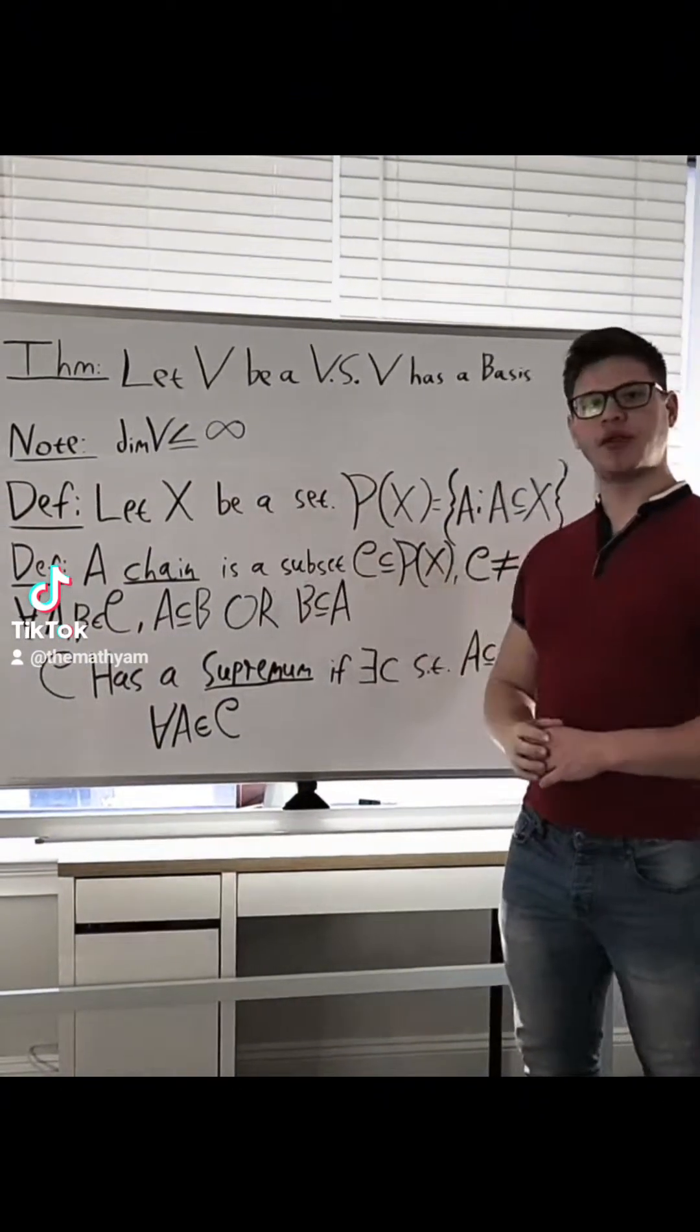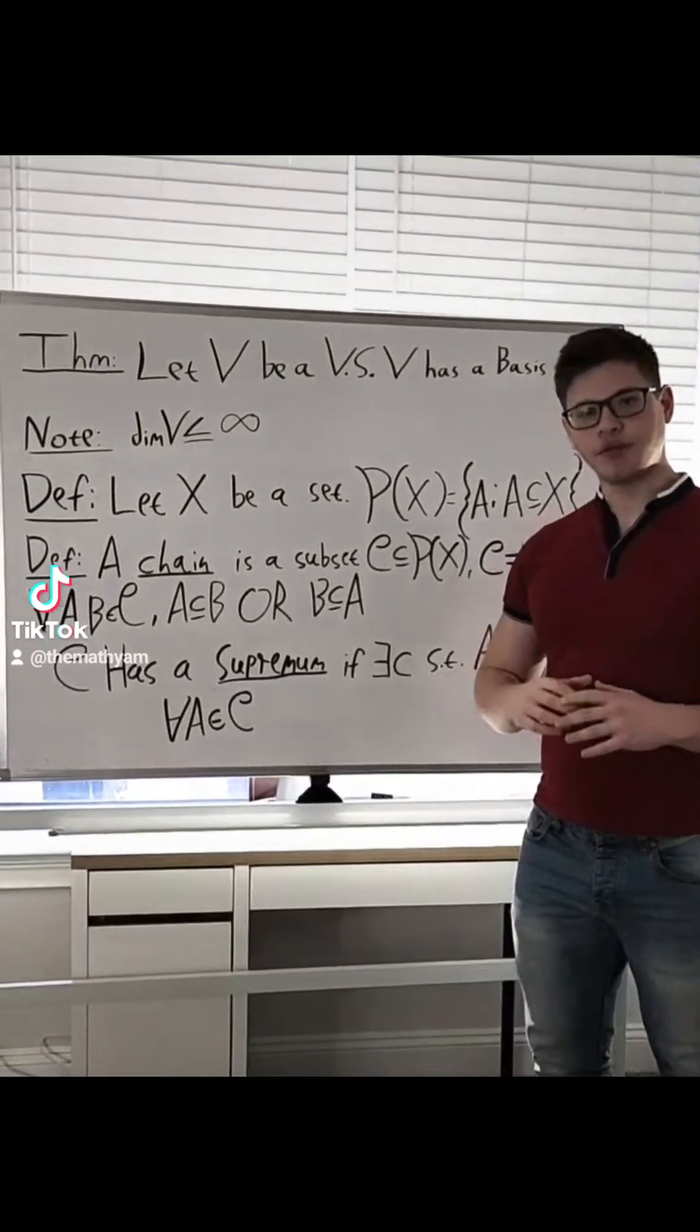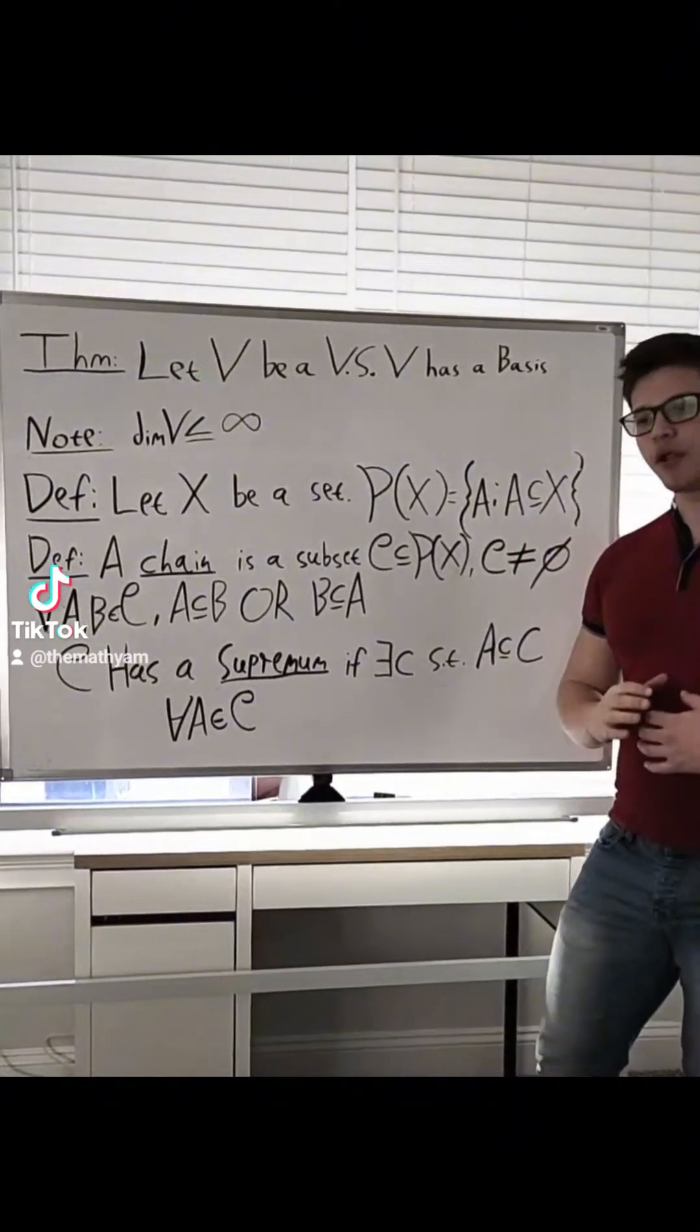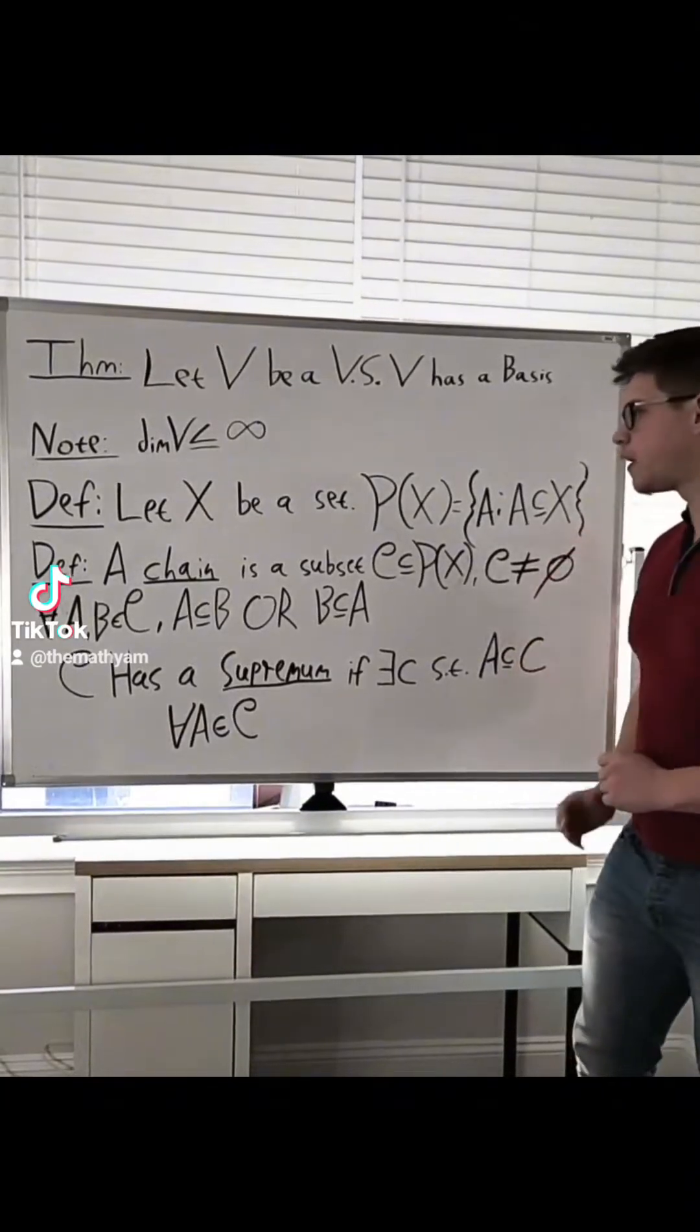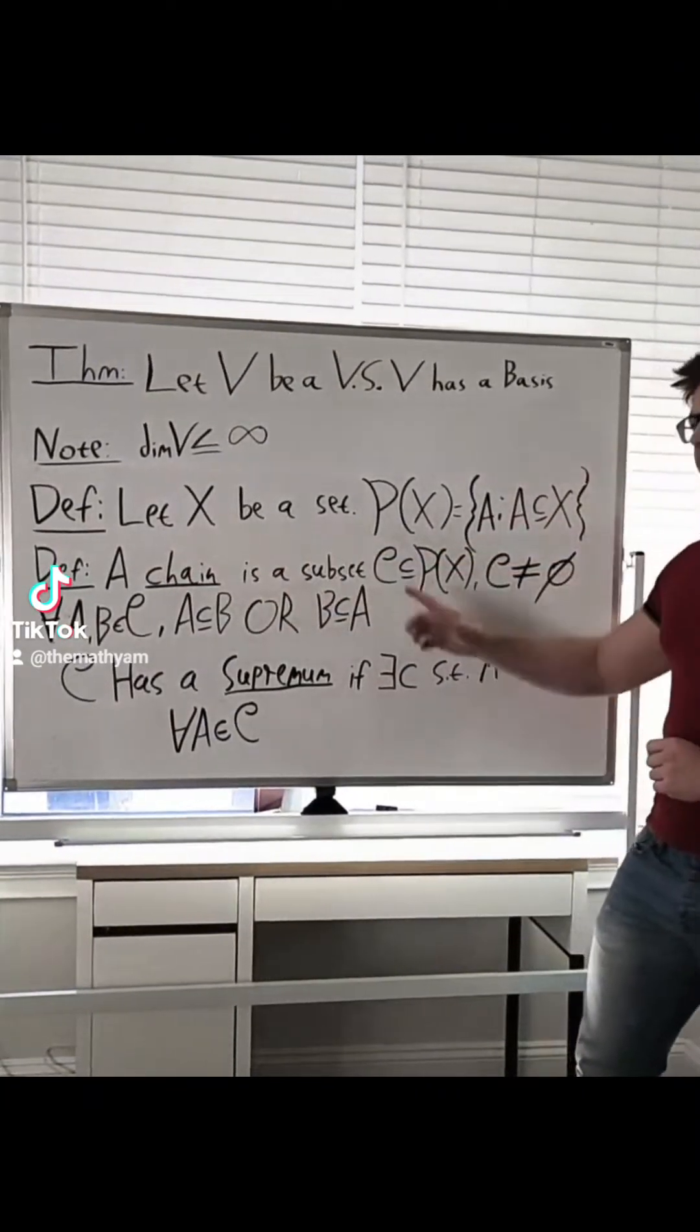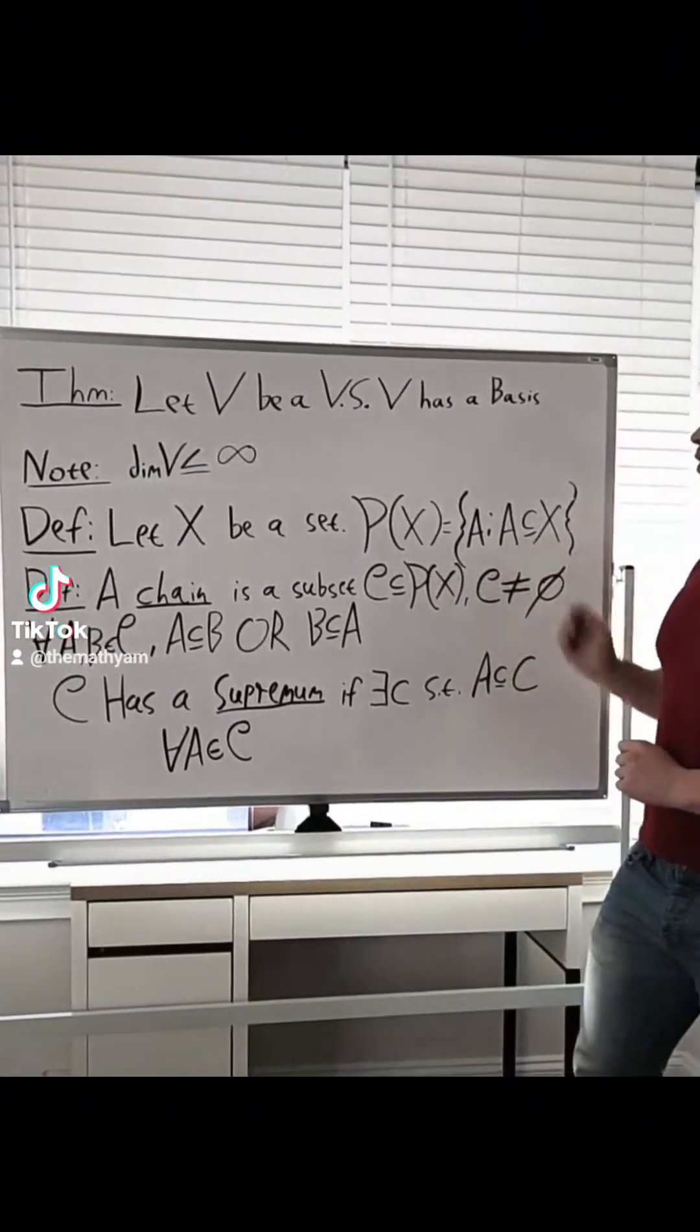First of all, we need some preliminary notions. The tool we're going to use is called Zorn's Lemma, a very powerful tool used a lot in mathematics, especially in algebra and geometry. So let X be a set. We denote its power set by P(X), which is just the set of all subsets of X.